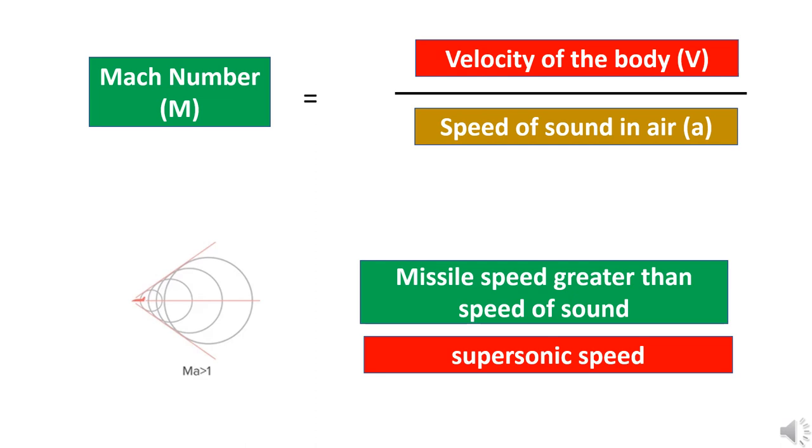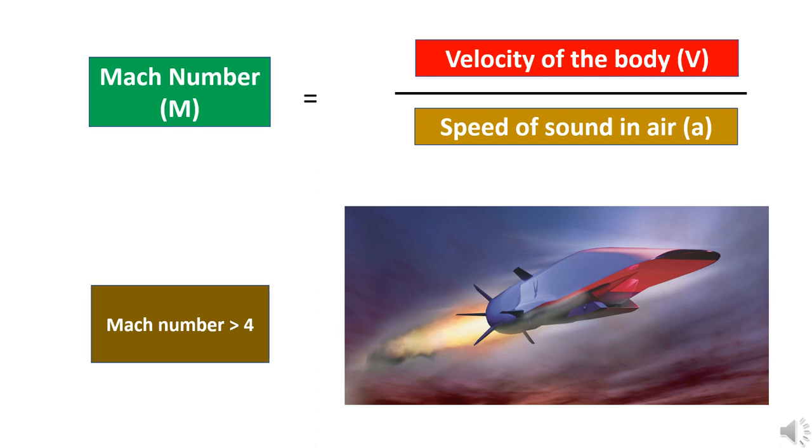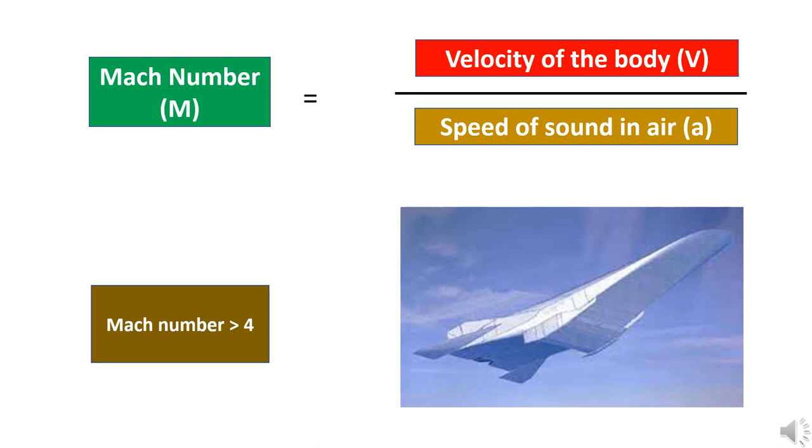Above Mach one the missile speed is supersonic, but it does not stop there. If we still increase the missile speed more than four times the speed of sound, that is Mach greater than four, we call it hypersonic speeds. The scramjet engines are sophisticated engines used to propel missiles to hypersonic speeds to the target.